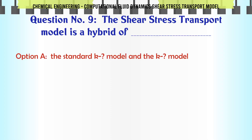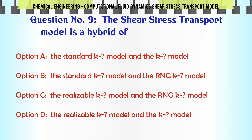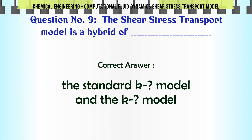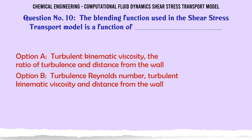The shear stress transport model is a hybrid of: A) The standard K-ε model and the K-ω model — B) The standard K-ε model and the RNG K-ε model — C) The realizable K-ε model and the RNG K-ε model — D) The realizable K-ε model and the K-ω model. The correct answer is: the standard K-ε model and the K-ω model.